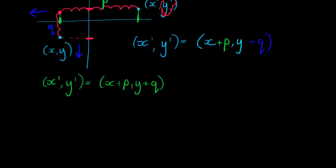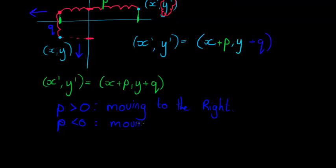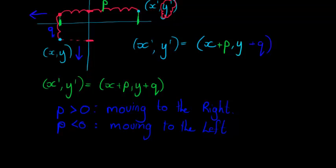Then if p is positive, I'm moving in the positive direction on the x-axis, so moving to the right. And if I have that p is negative I am moving to the left. Obviously if p is 0 I am not moving left or right.